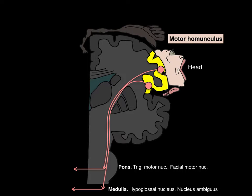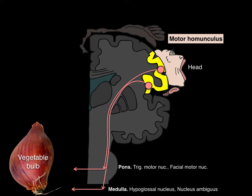Early anatomists looked at the pons and medulla and said it looked like a vegetable bulb, so they called the pons-medulla the bulb. This tract going to cranial nerve motor nuclei in the pons and medulla is therefore called the corticobulbar tract — cortico for cerebral cortex, bulbar for the bulb.